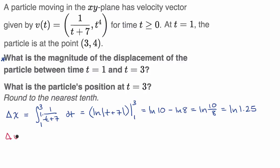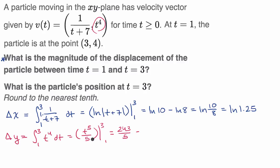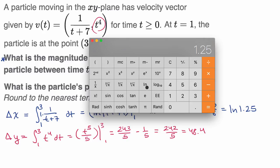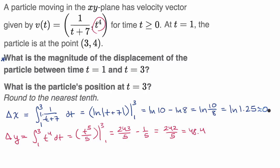Now let's figure out Δy. We take the integral from 1 to 3 of the y-component of velocity, t⁴ dt. Using the reverse power rule, that's t⁵/5 evaluated from 1 to 3: (243/5) − (1/5) = 242/5 = 48.4. Using a calculator, ln(1.25) ≈ 0.22. So Δx ≈ 0.22 and Δy = 48.4.